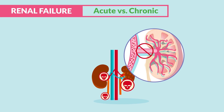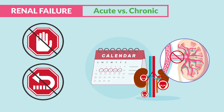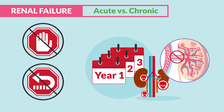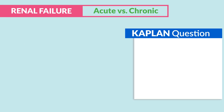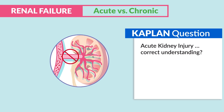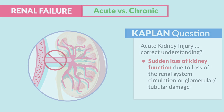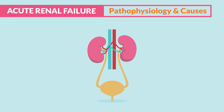Acute kidney failure, also called acute kidney injury, is a sudden short-term loss of kidney function. If not stopped or reversed, it can lead to chronic renal failure. A Kaplan question asks about acute kidney injury — the correct answer is sudden loss of kidney function due to loss of renal circulation or glomerular or tubular damage.